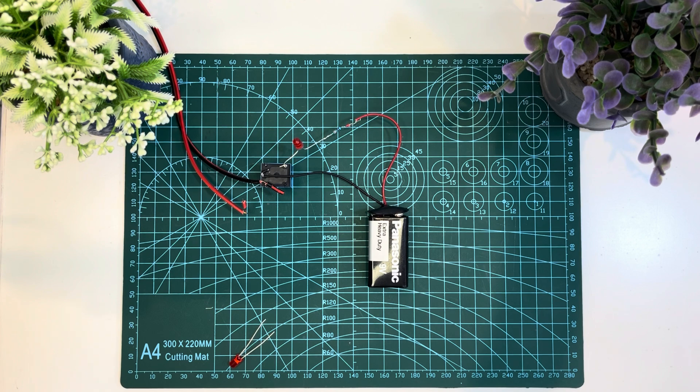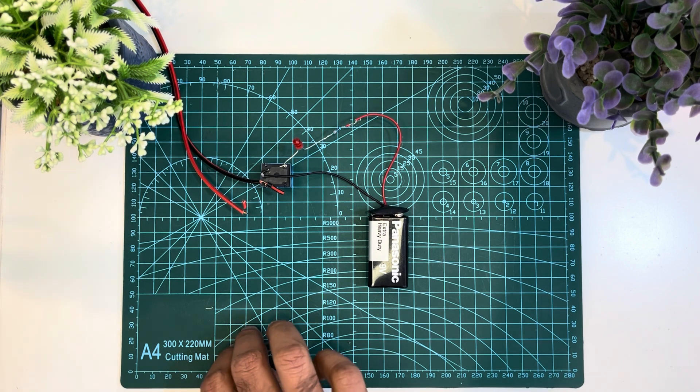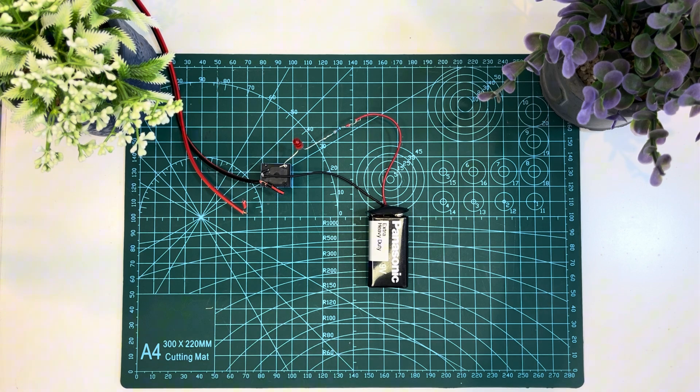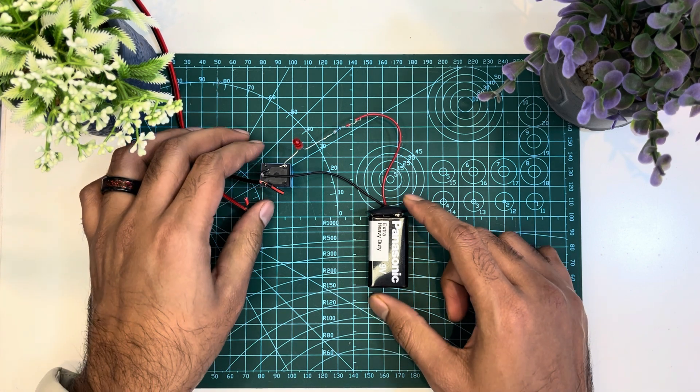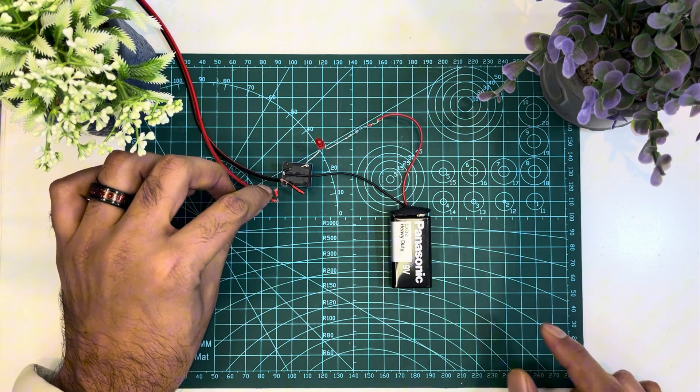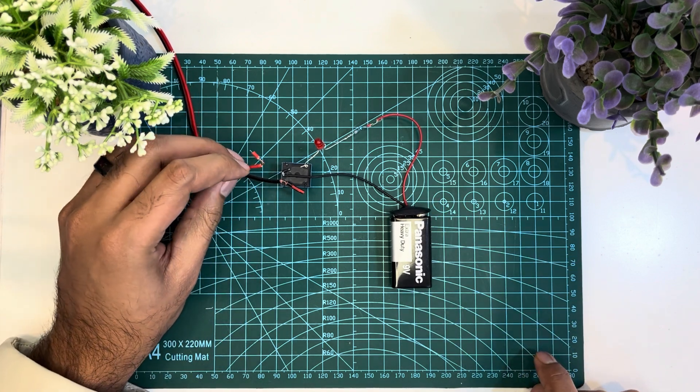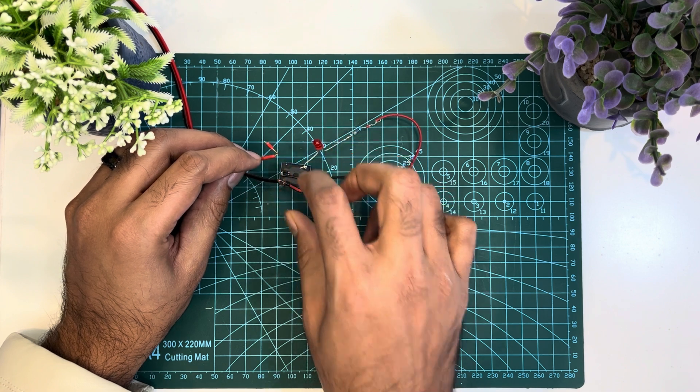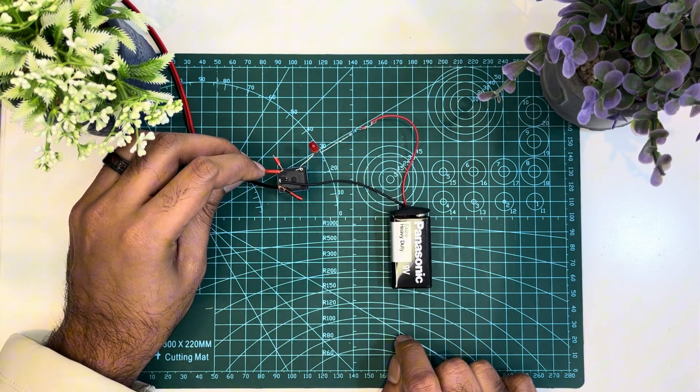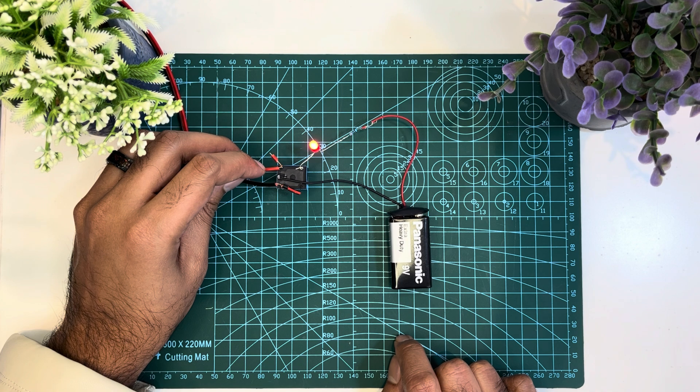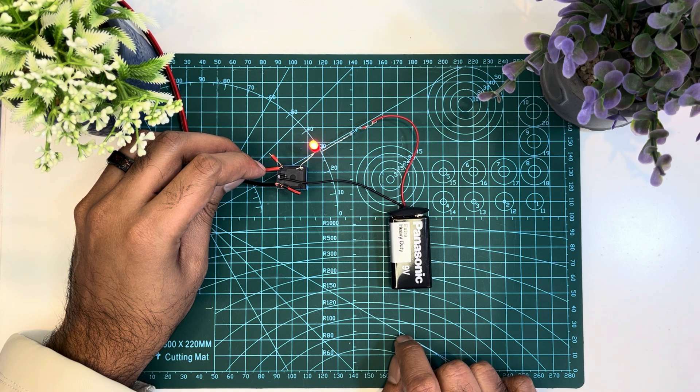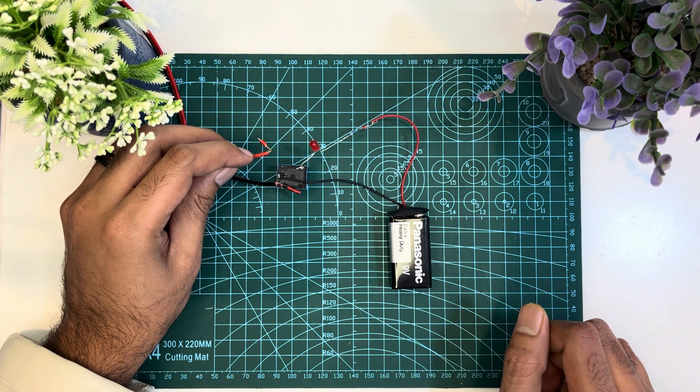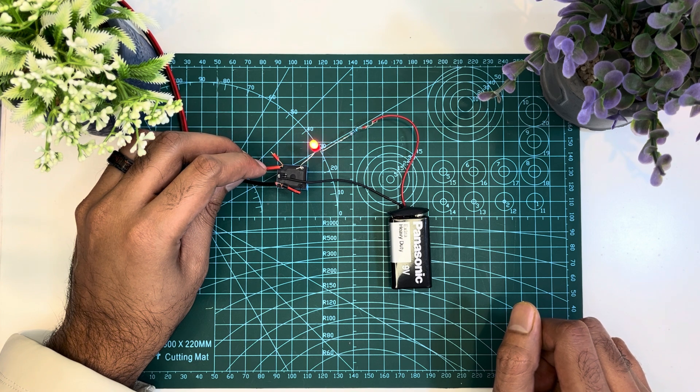As we explained before, if we give 5V DC to the coil pins, the relay will trigger. Then the normally open pin and the common pin will be shorted. As a result, the LED circuit will be completed and the LED will glow. Let's test it and see what happens. So here it is. As soon as the relay triggered, the LED is glowing. Everything is going well according to the theory.